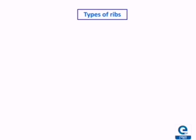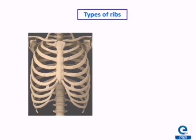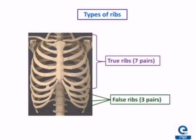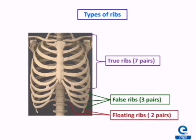Now we will learn about the types of ribs. The sternum is the long flat bone located in the central part of the chest, also known as the breast bone. The first 7 pairs of ribs are directly attached to the sternum and are known as the true ribs. The next 3 pairs — the 8th, 9th, and 10th ribs — are not directly attached to the sternum but are joined to the 7th pair, so they are named false ribs. The last 2 pairs, the 11th and 12th, are neither attached to the sternum nor to the 7th pair and float at the back, so they are named floating ribs.